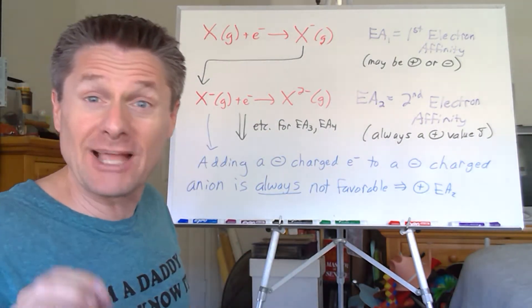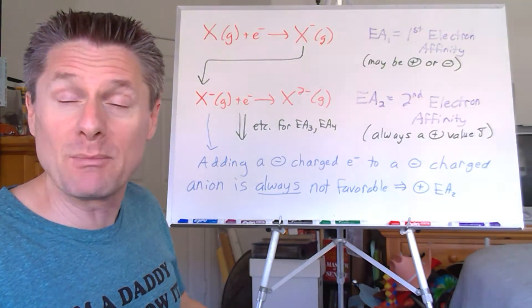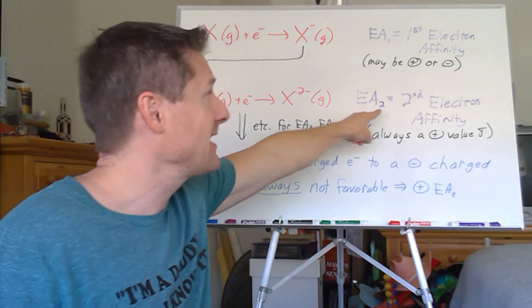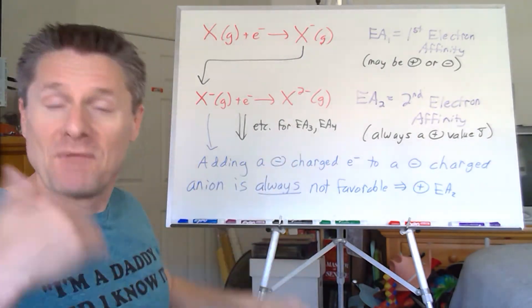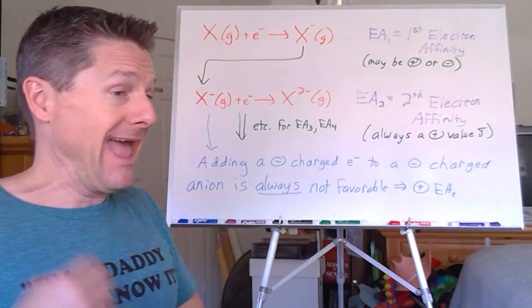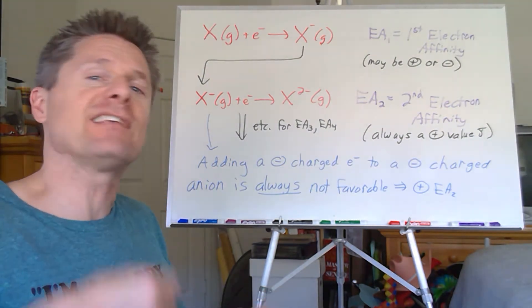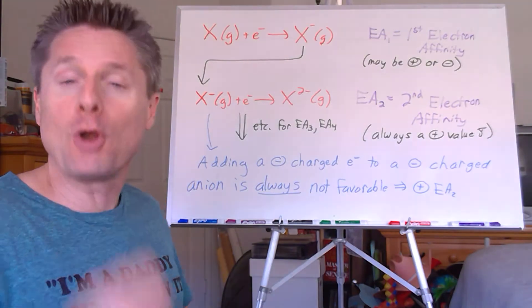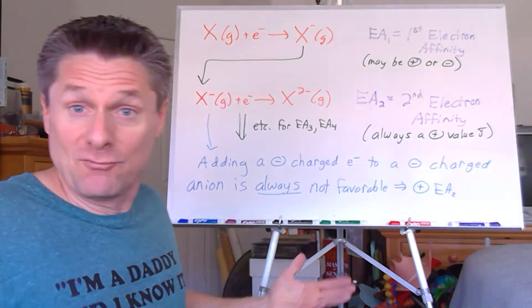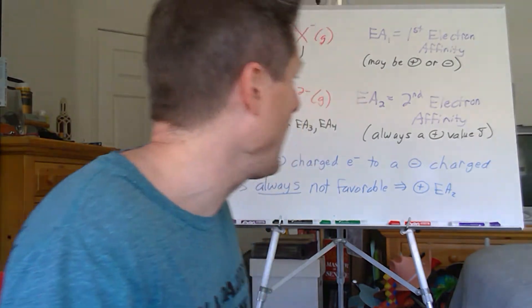That's always going to be positive or endothermic, not favorable. So the second electron affinities and third and fourth and fifth — every time you add another electron, adding an electron to a negative two anion is harder to do than a negative one. Adding an electron to a negative three anion is way harder than a negative two. So each successive electron you add gets harder and harder. It becomes more positive, more endothermic. So there's a limit. EA2 values are always, always positive.